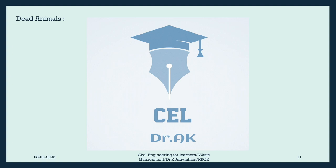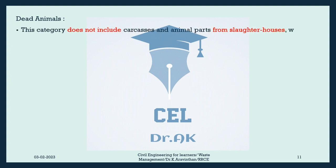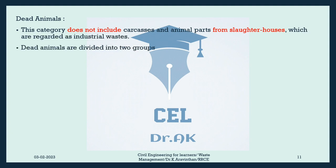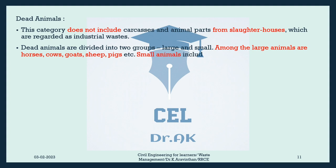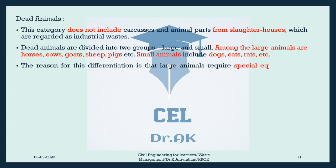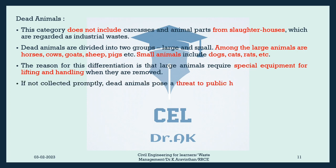Dead Animals: This category does not include carcasses and animal parts from slaughterhouses, which are regarded as industrial wastes. Dead animals are divided into two groups: large and small. Large animals include horses, cows, goats, sheep, pigs, etc. Small animals include dogs, cats, rats, etc. Large animals require special equipment for lifting and handling when removed. If not collected promptly, dead animals pose a threat to public health since they attract flies and other vermin as they decay.